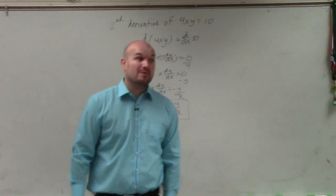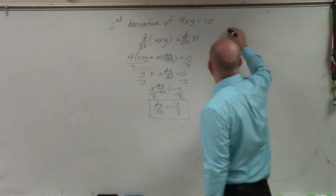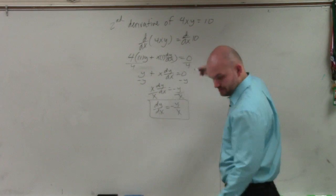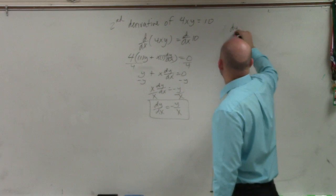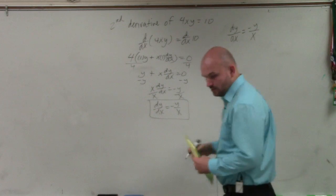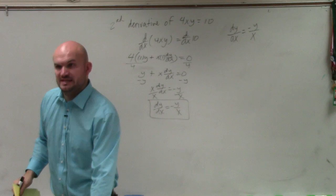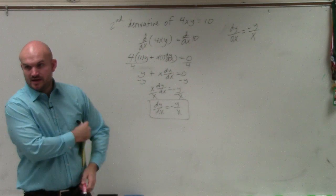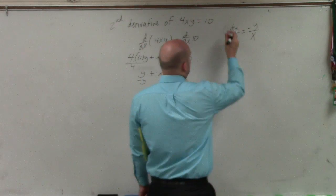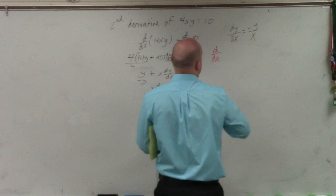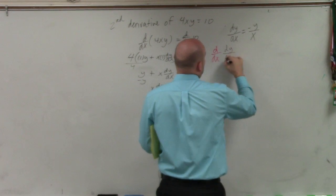OK? So if we want to find the second derivative, we have dy over dx equals negative y over x. Well, to find the second derivative, to do implicit differentiation again, we need to do d over dx again, right? So we're going to do d over dx of dy over dx.